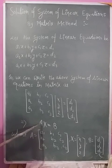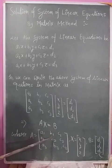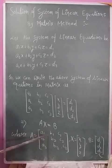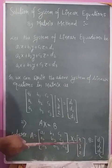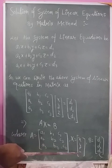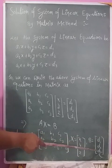This is equal to AX = B, where A is the coefficient matrix a1, b1, c1; a2, b2, c2; a3, b3, c3. X equals the variable matrix x, y, z. And matrix B equals d1, d2, d3.